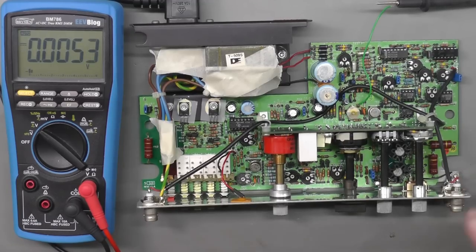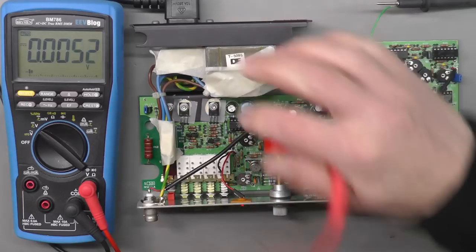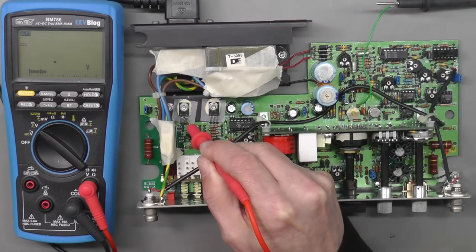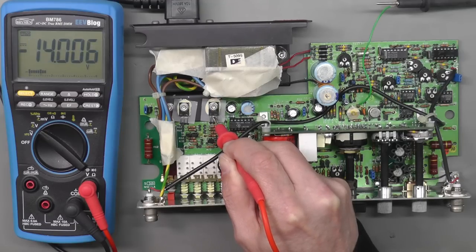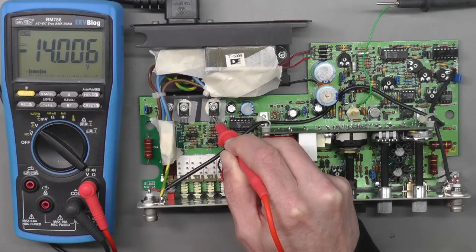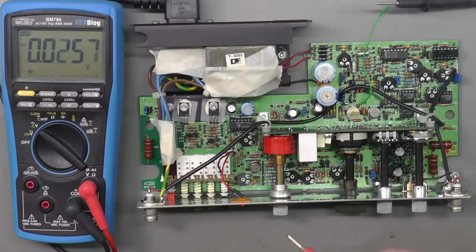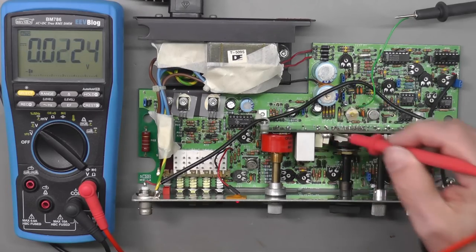I think we're ready for a power up again and let's see what the rails are sitting at now. Okay, ready for power up. Let's put power on and check that plus 14 volt rail there—13.9, perfect. And the negative 14, minus 14.0, perfect.